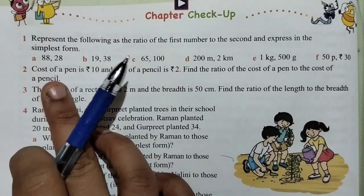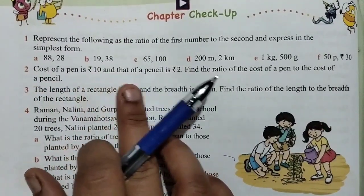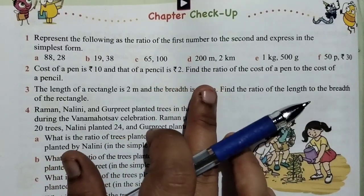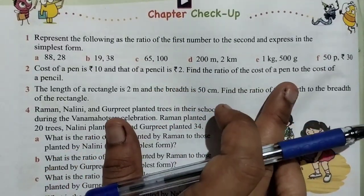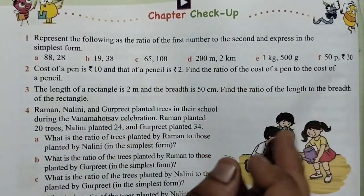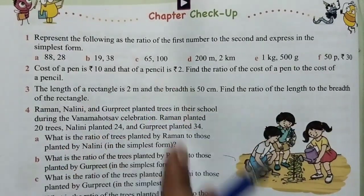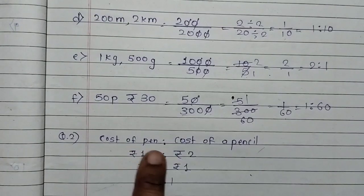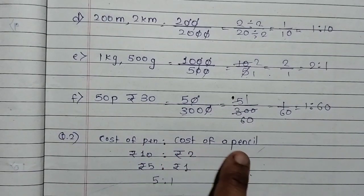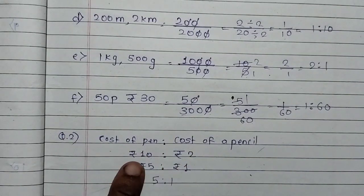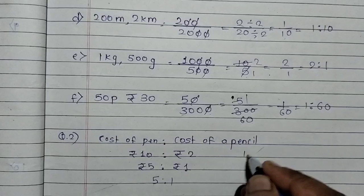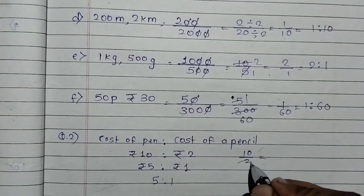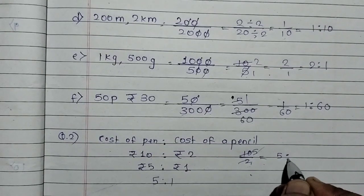Question number 2: cost of a pen is rupees 10 and that of a pencil is rupees 2. Find the ratio of the cost of pen to the cost of pencil. So our ratio is cost of pen to cost of pencil, which is 10 upon 2. This is 10 upon 2, 2 into 1 is 2, 2 into 5 is 10, so answer is 5 is to 1.